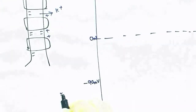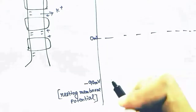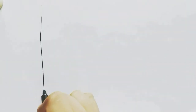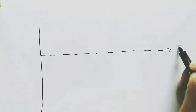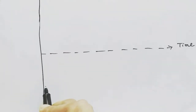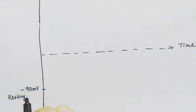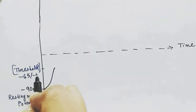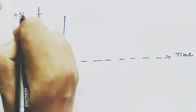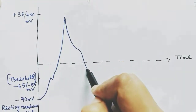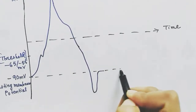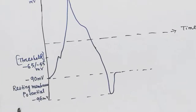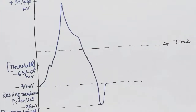If we plot voltage against time: when all gates are closed, the membrane is at resting membrane potential of −90 mV. When ligand-gated channels open, positivity increases and reaches the threshold of −65 to −55 mV. When voltage-gated channels open, it reaches +35 to +40 mV, then goes down when sodium channels close and potassium channels open. It reaches a hyperpolarized position of −96 mV, releasing more positive charge than needed, then returns to resting membrane potential when all gates close again.